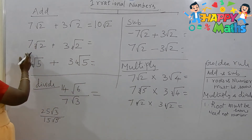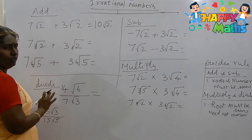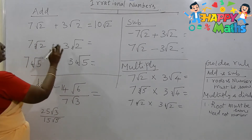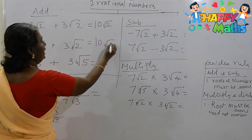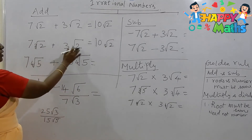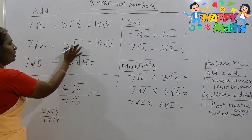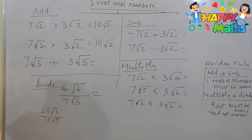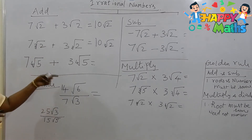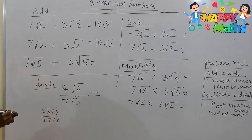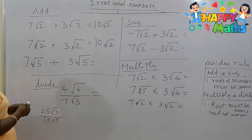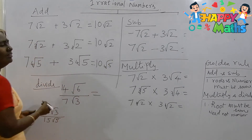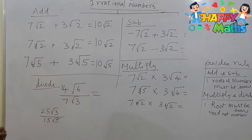Now here also, see: 7 cube root of 2 plus 3 cube root of 2. This is also cube root of 2 — let us take it as monkey. 7 monkeys plus 3 monkeys, all together 10 monkeys. I am not at all adding or subtracting or multiplying anything with the root number — I am just keeping it as a constant, like a donkey or monkey. So the answer is 10 4th root of 5. Finished. Addition of irrational numbers is so so simple.